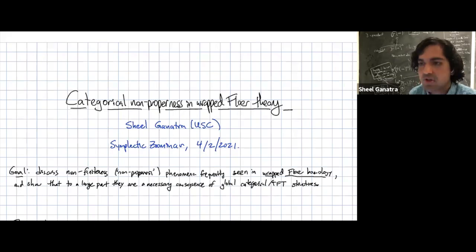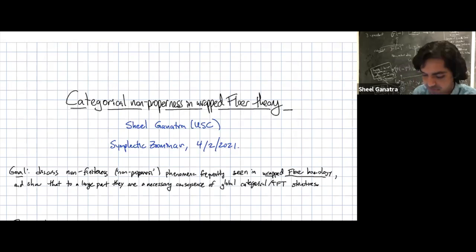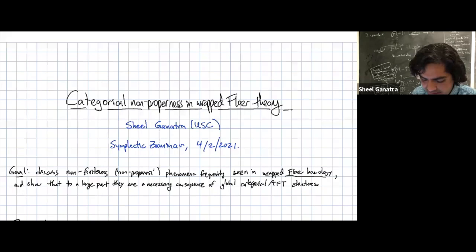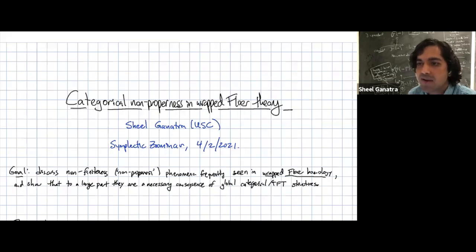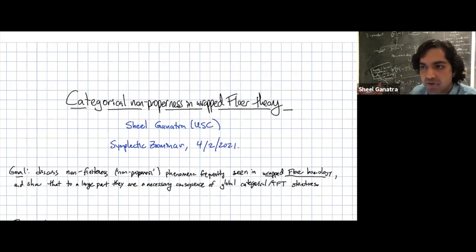I want to tell you today about some non-finiteness or non-properness phenomena that we frequently see in wrapped Floer homology. The main goal of today is to tell you that these non-properness phenomena we've been seeing in lots of examples are a necessary consequence of global categorical and/or topological field theoretic structures.